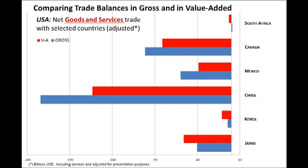Finally, bilateral trade balances are resized. Let's take the example of the US. Some balances will change signs. For example, South Africa has a small deficit with the US when we compute balances in commercial terms. But in value added, South Africa has a small surplus with the US, because South Africa produces primary products that will be transformed in third countries, like Europe or China,